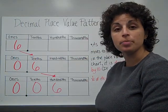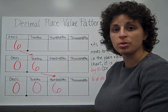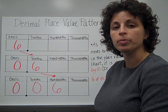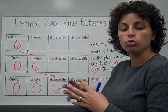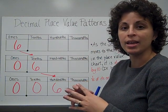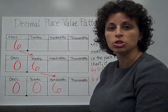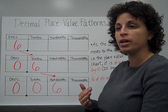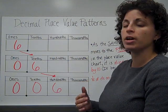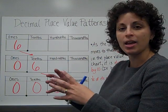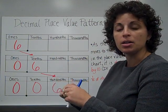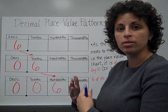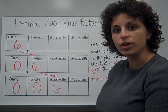Our number system is a base-10 number system. We've talked about this before. It takes a group of 10 to make the next largest place value. Or if you're going in the opposite direction, if you take a larger place value and divide it by 10, you would get the smaller place value.